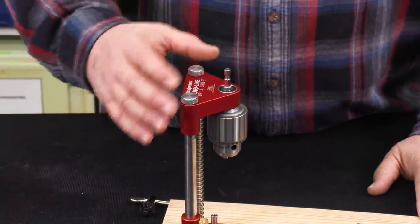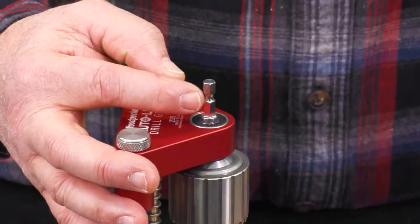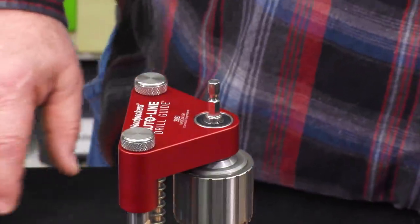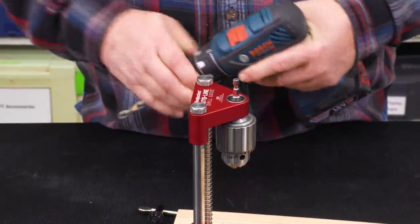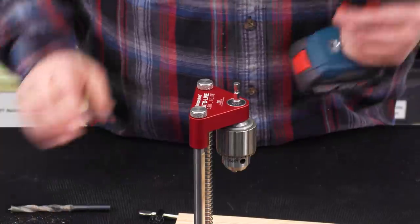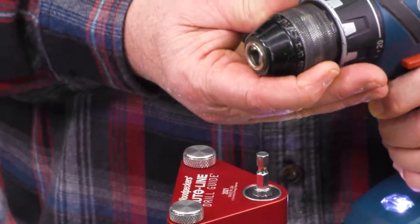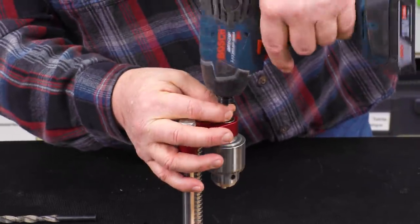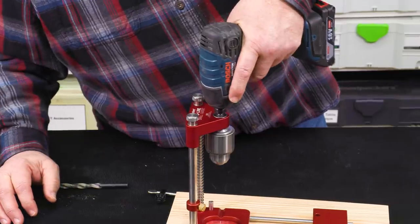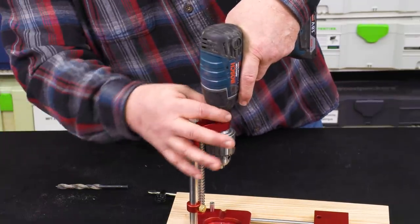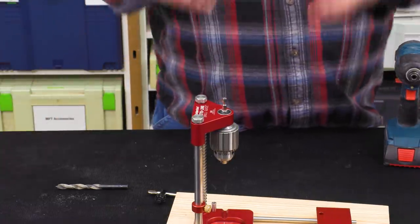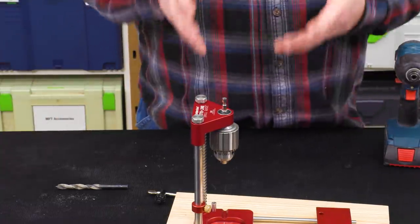The Auto Line uses a standard hex shank design which wasn't around when the Portal Line came out that fits into any drill whether it's a keyless chuck, a keyed chuck, or even one of these impact drivers. It just drops right on. So you don't have to permanently assign a drill to the tool.